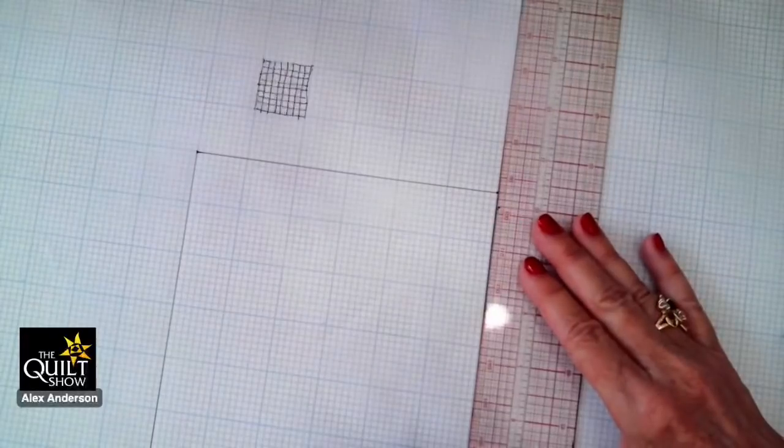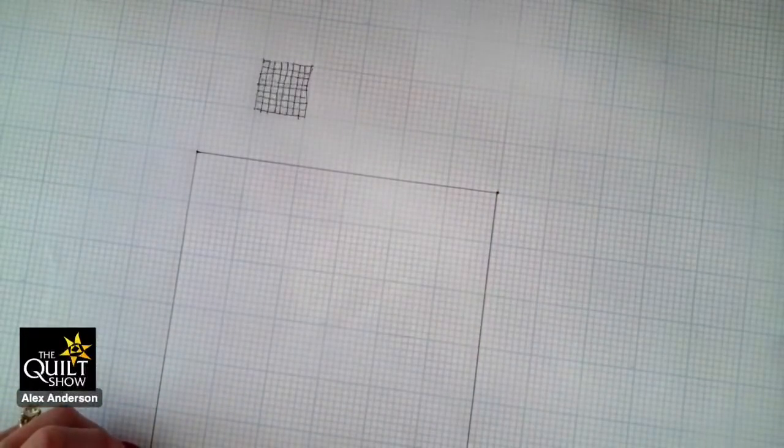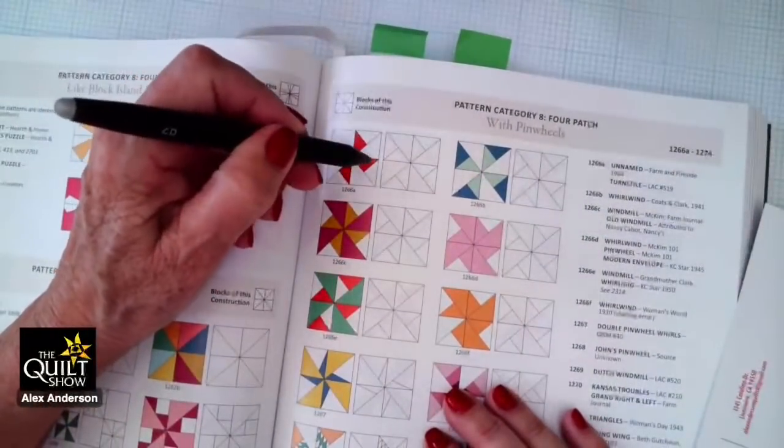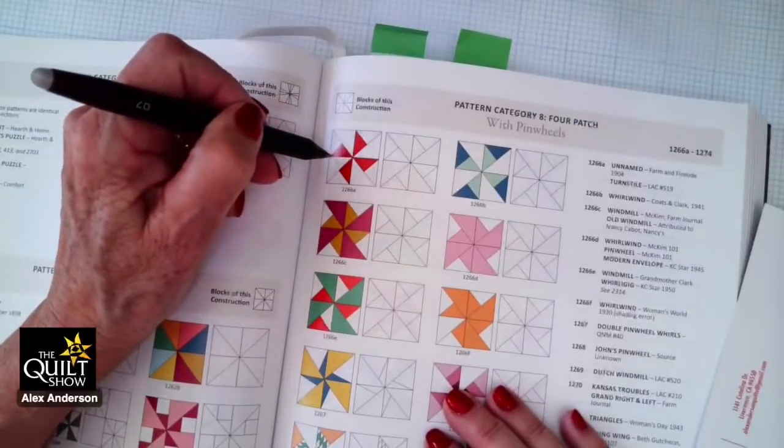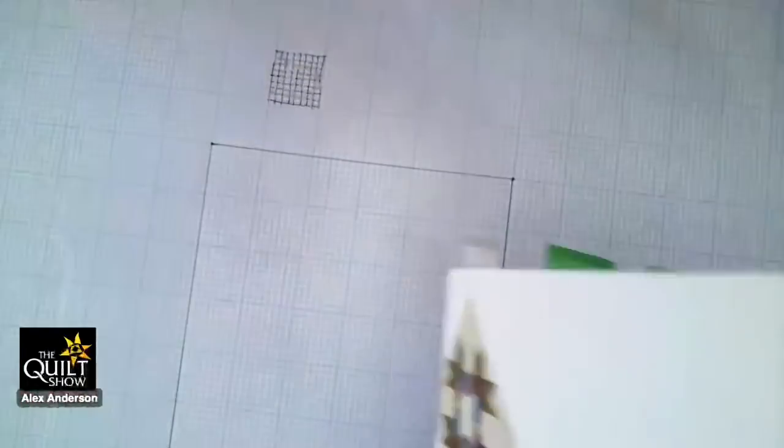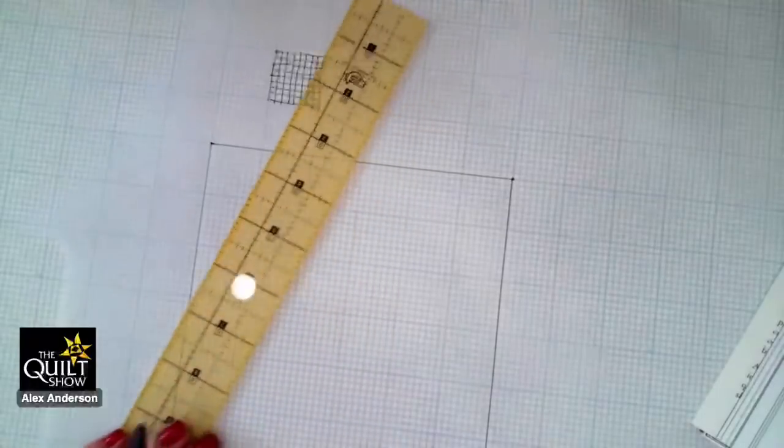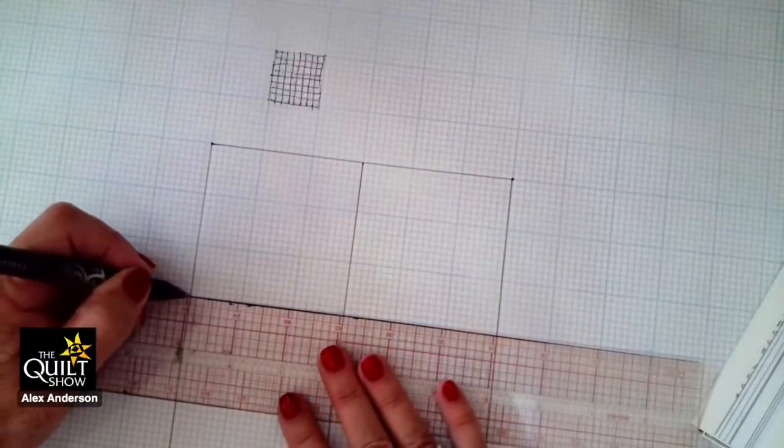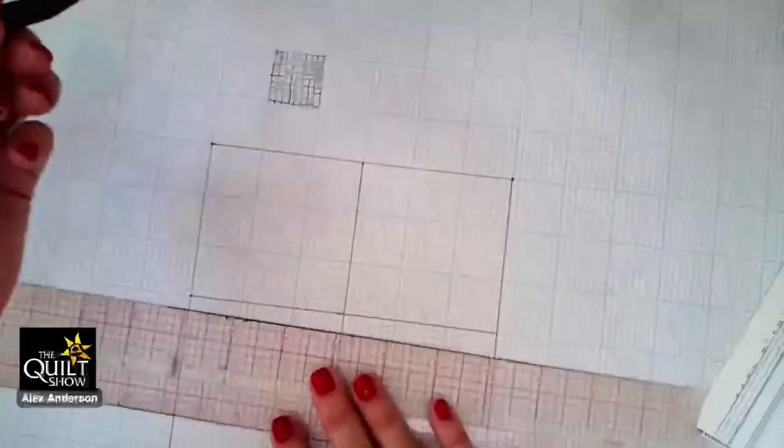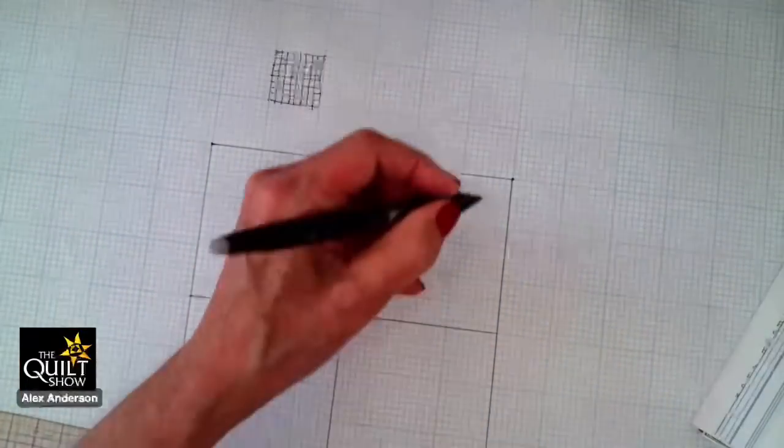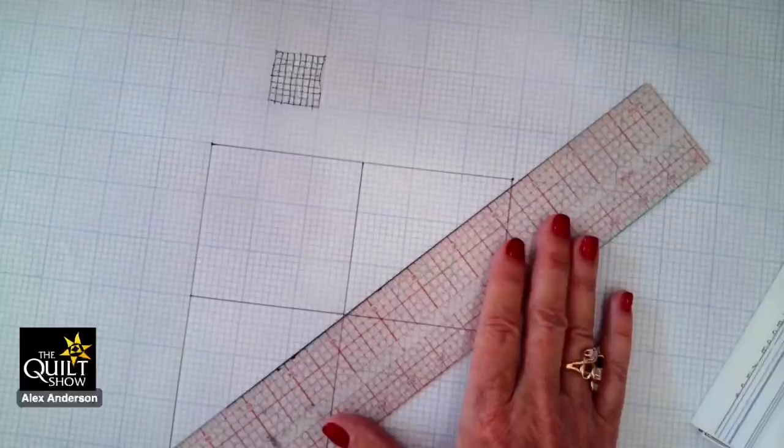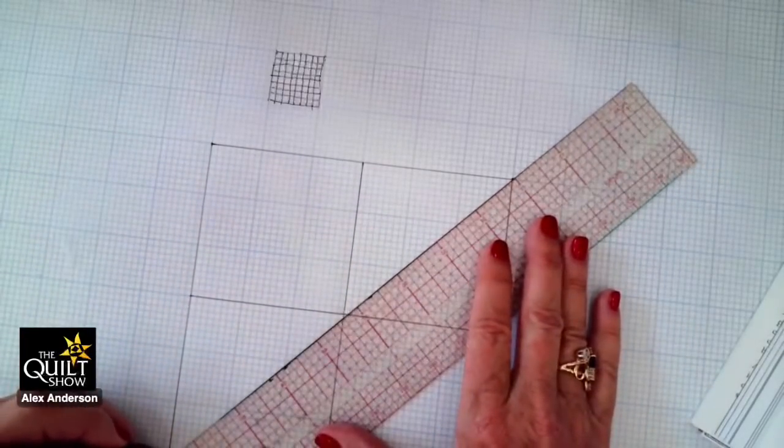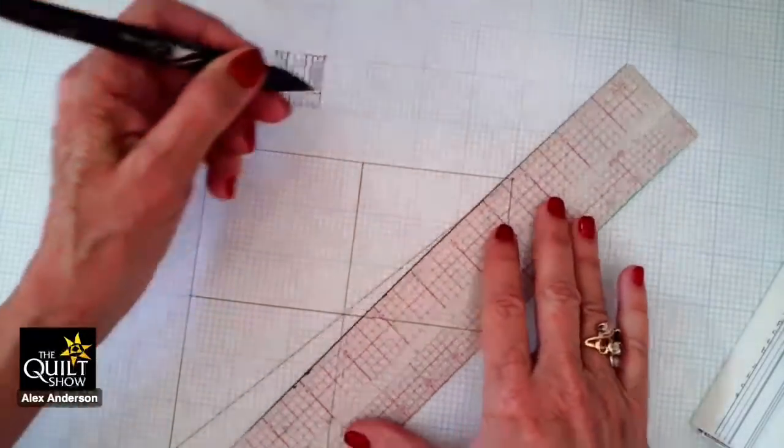And then I'm going to come over here, and I'm going to draw this. There is my finished block size, ready to go. So the next thing I'm going to do is I'm going to draw this line right here. I'm going to do my little cross cross. So I would come over three. I am going to do rotary cutting on this, so it doesn't have to be exact. But if you are going to make a template, you want it to be exact. So now I've got the four patch. Now I need to do an X in it.